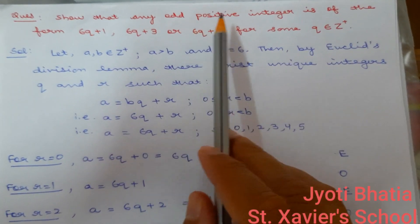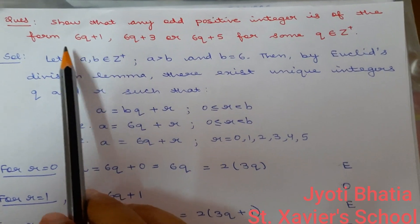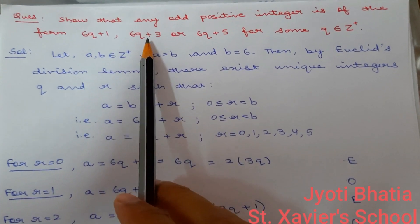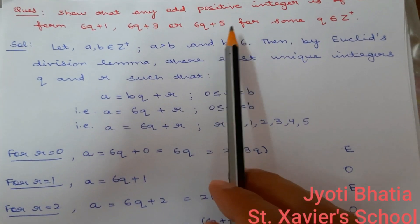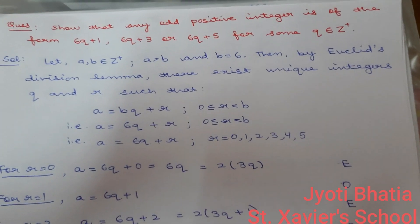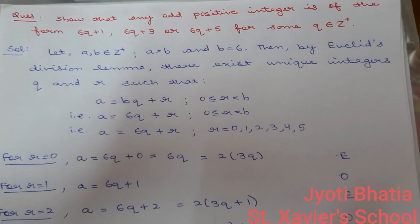Show that any odd positive integer is of the form 6q plus 1, 6q plus 3 or 6q plus 5 for some integer q. What does this question mean?